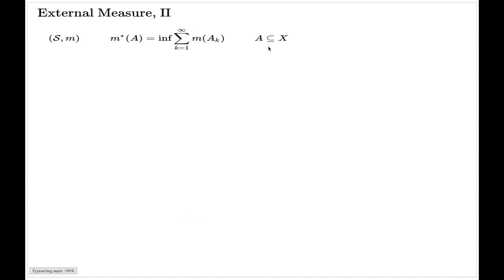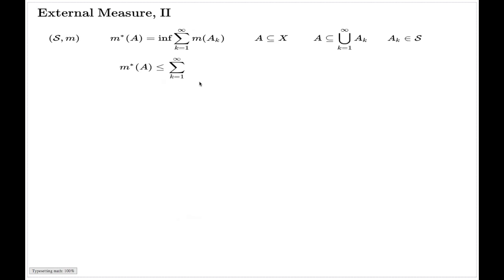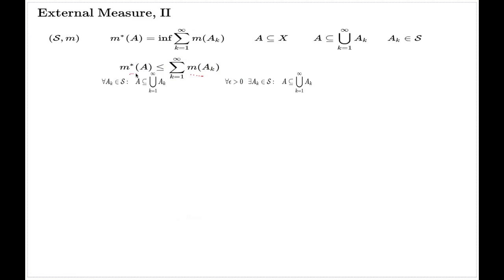Here A is a subset of the universal set X, and A_k is a covering — not necessarily disjoint — of your set with elements of the semi-ring. The external measure is the infimum of all possible sums, where the infimum is taken over all possible coverings. The epsilon version of the infimum definition says that the external measure of a set is always less than the sum of the individual measures for any covering. On the other side, if you fix an epsilon greater than zero, there is a covering whose summed measures exceed the external measure by at most epsilon.